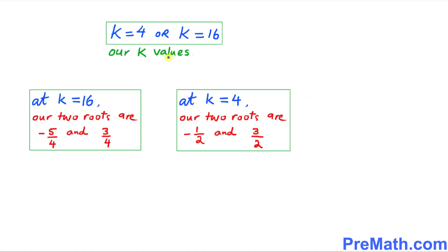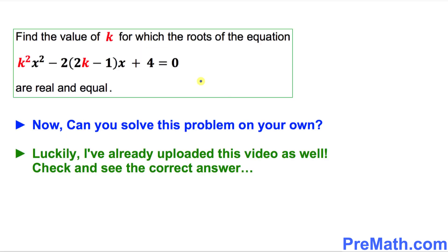That's our complete set of answers — we found two K values (4 and 16) and the corresponding roots. Now here is your assignment: can you find the value of K in the new problem on your own? Pause the video and try it. I've already uploaded a solution video — go check it out. Thanks for watching, and please don't forget to subscribe for more exciting videos!